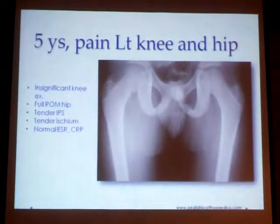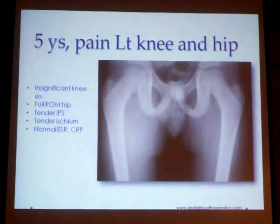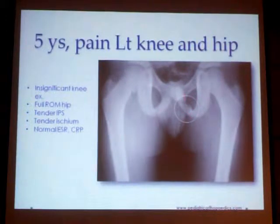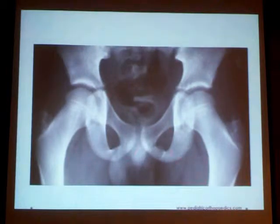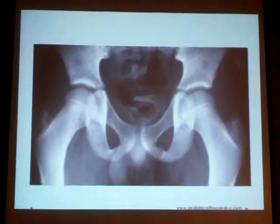This is another boy who presented with hip pain and bending of the left knee and hip. Knee examination was insignificant, with full range of movement of the hip. There was tender ischiopubic ramus and tender ischium. The x-ray shows asymmetry of the ischiopubic junction, which is very evident here, but it appears to have healed with time — the previous x-ray showed osteopenic potential, while now it is completely ossified.